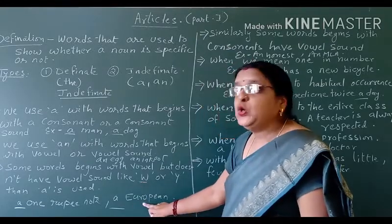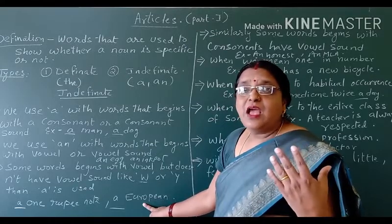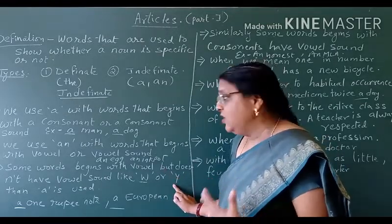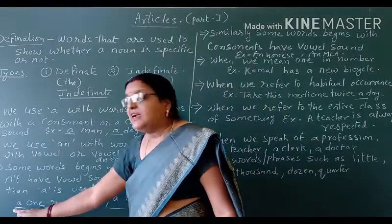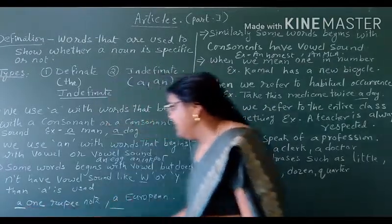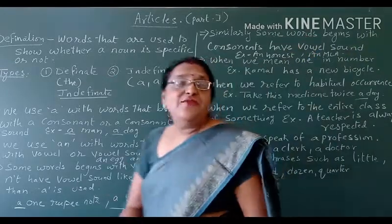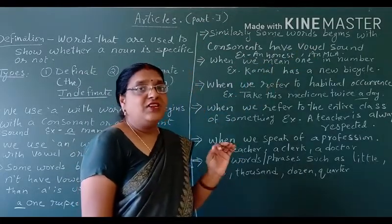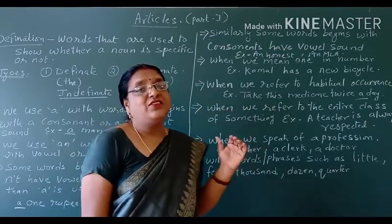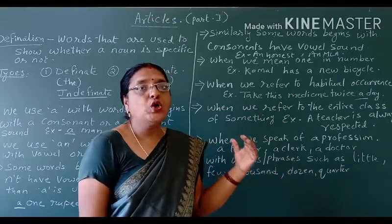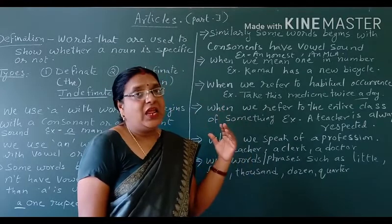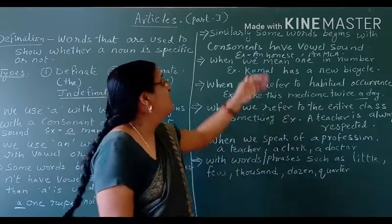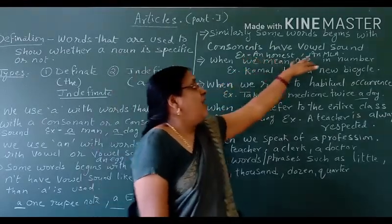Whenever we pronounce 'European,' the sound of consonant Y is coming. So instead of 'an,' we put 'a' here. Similarly, some words begin with a consonant but have a vowel sound — like 'honest,' 'honorable,' 'hotel.' While speaking, a vowel sound is created. So in those conditions, we use 'an': an honest, an MLA.